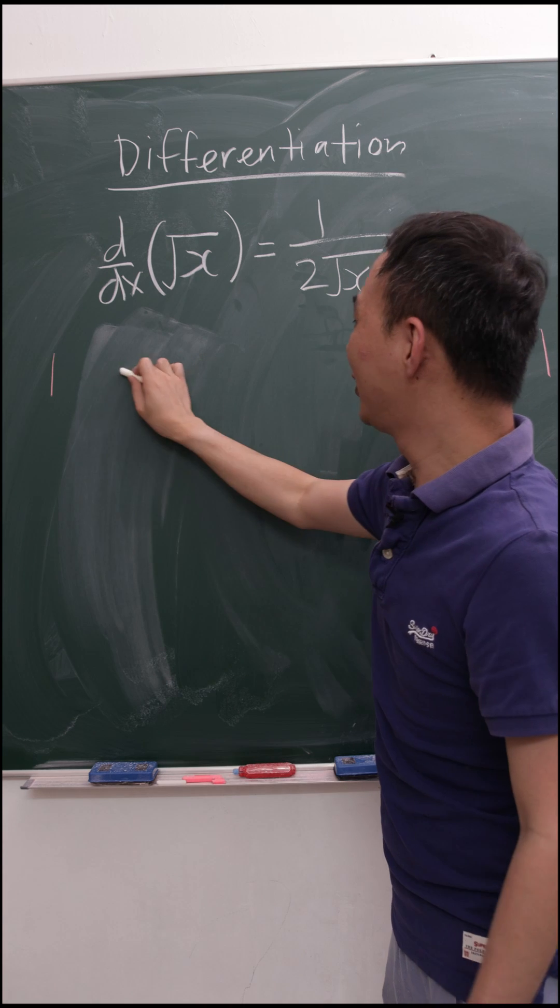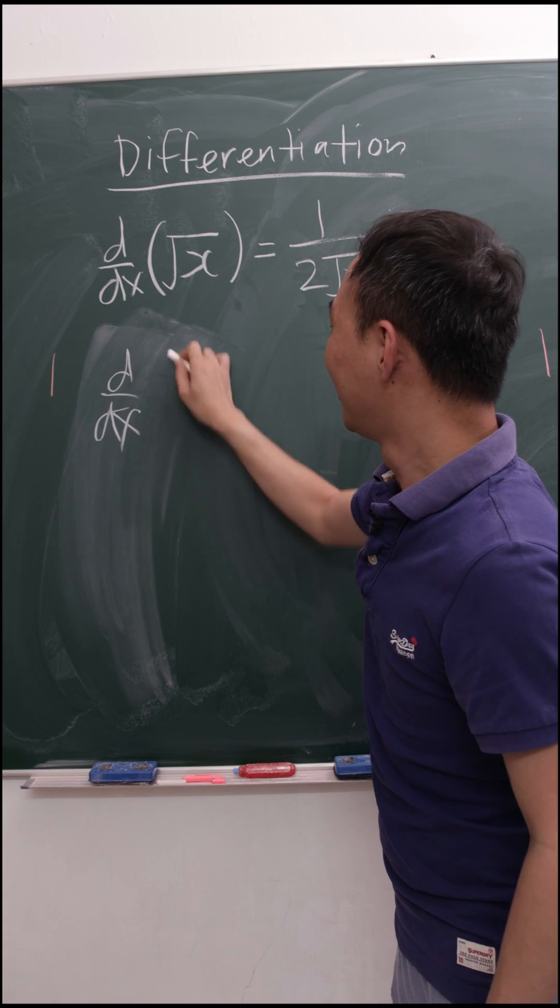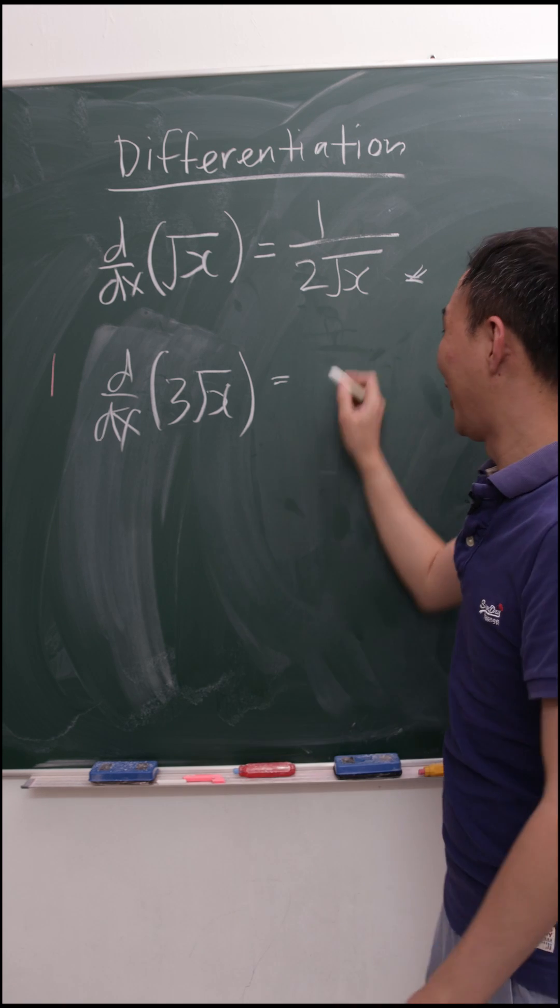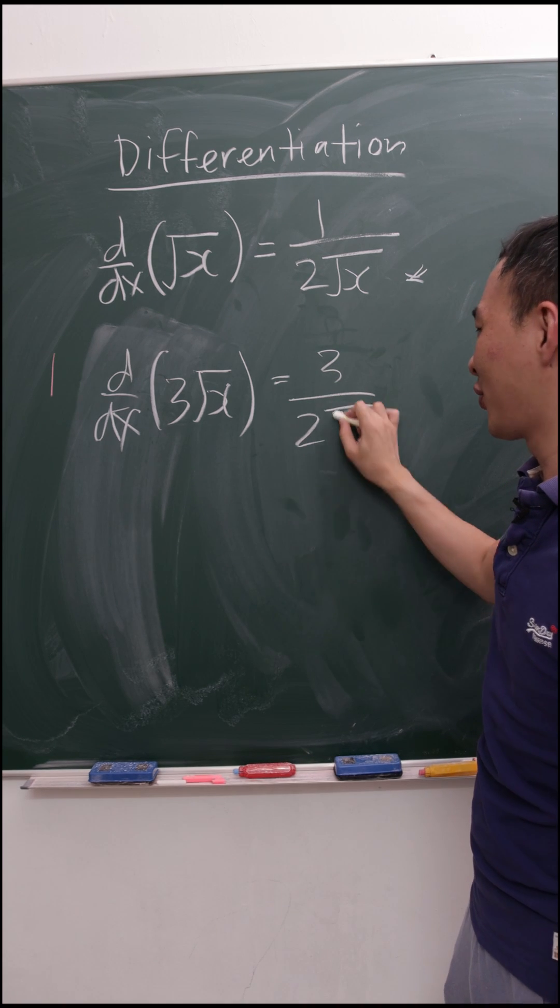I'll give you another example. If today I want to differentiate 3 square root x, if I do this one real quick, I will get 3 over 2 square root x.